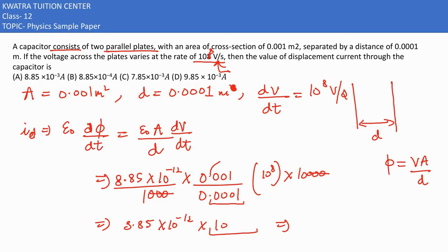Now 10 to the power minus 12 into 10 to the power 9 can be reduced. So it would be 8.85 into 10 to the power minus 3 ampere. So I can see option A would be correct here, and it is matching with the answer. In milliampere, it would be 8.85 milliampere, because 1 milliampere has 10 to the power minus 3. So A option is correct.